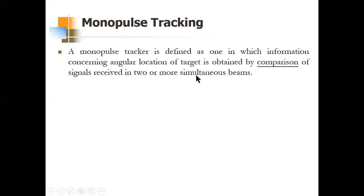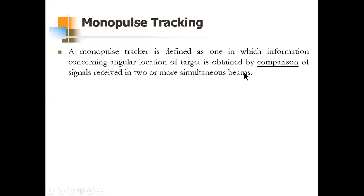So this is monopulse tracking, where we use two simultaneous beams. For one angle coordinate you need two simultaneous beams; for two angle coordinates you will need a minimum of four simultaneous beams. Sometimes three beam positions are used, but usually four simultaneous beams are used to get two-angle-coordinate location of the target. Monopulse tracking is the one in which information concerning angular location of the target — azimuth as well as elevation angles — is obtained by comparison of signals received in two or more simultaneous beams. Comparing the amplitudes of those echo signals, we decide if the target is on track or not.